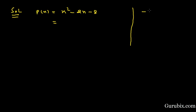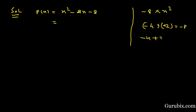The product of the last term and the first term is minus 8x squared. If we factorize minus 8, then we have minus 4 and plus 2, because if we multiply minus 4 and plus 2, we get minus 8. And if we add minus 4 plus 2, we get minus 2, which equals the coefficient of the term x. Therefore, we split the middle term as: x squared minus 4x plus 2x minus 8.